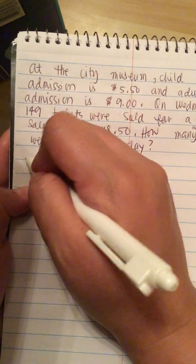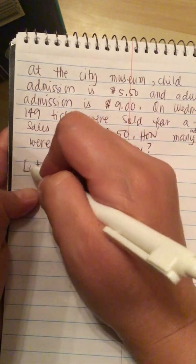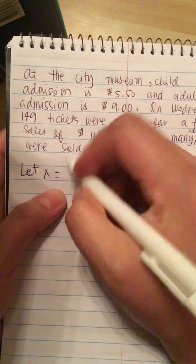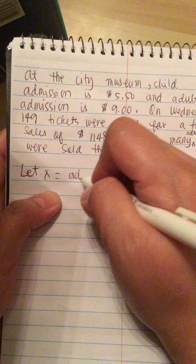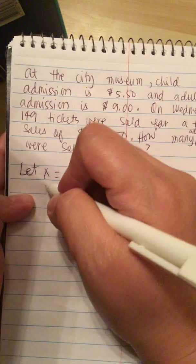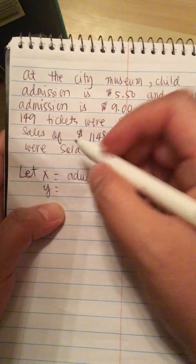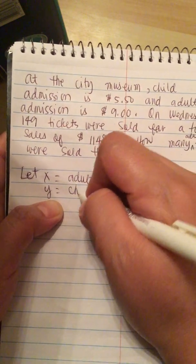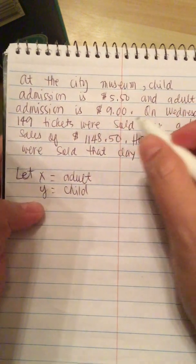We let X equal adult tickets, the number of adult tickets, and Y is the number of children's tickets. This is for the children.